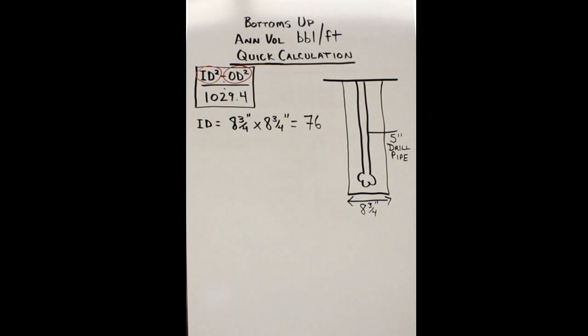OD squared: 5 times 5 equals 25, and you subtract the two numbers and you get 51.38 as the answer for that one. Then you take that 51.38 divided by that constant number there, 1029.4, and that gives you 0.05 barrels per foot.